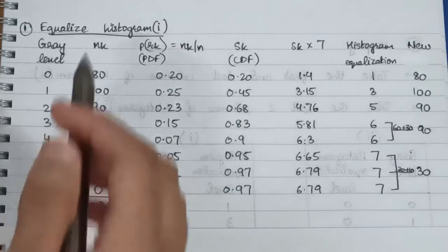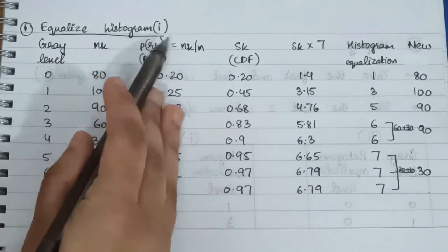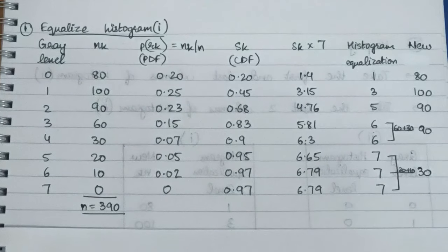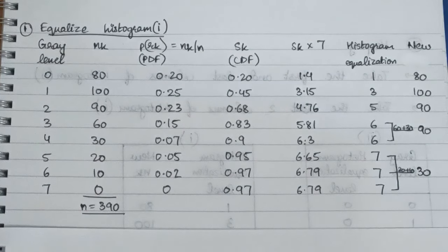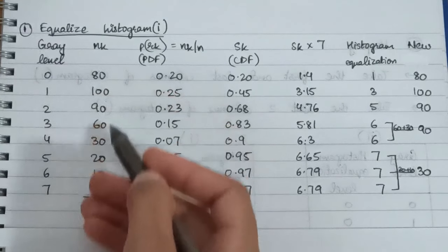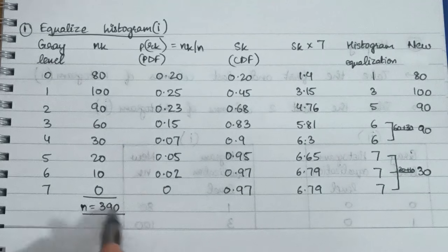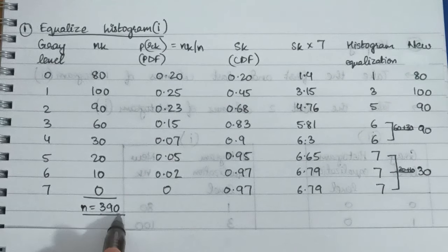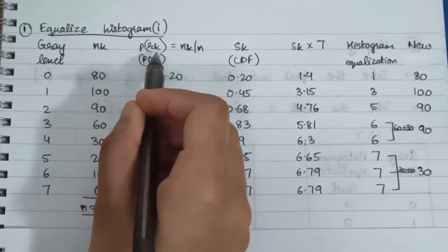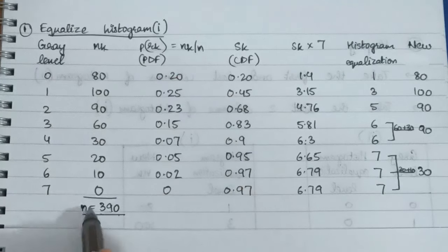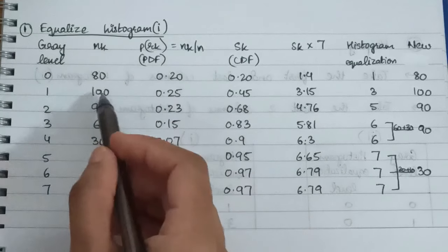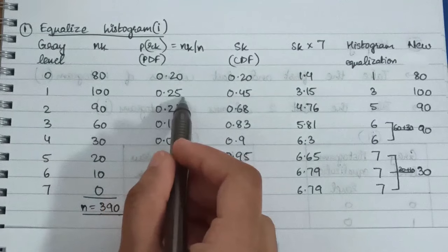The next step is to equalize the first histogram. We have drawn the table for the first histogram here, following the same steps as in histogram equalization. We write down the gray level and the nk values, then calculate the total nk value which comes out to be 390. Then we calculate the PDF, also known as p(rk), which is nk divided by n — so 80 by 390, 100 by 390, and so on.